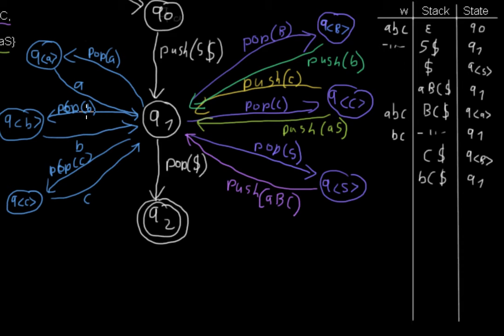We are back in q1. We can then follow this transition reading the b from the stack going to qb. Then we take some of the string. Until that point we are still left with bc as input string. Then we are following this transition reading the b from the input string and left with the c. And we are back in q1.